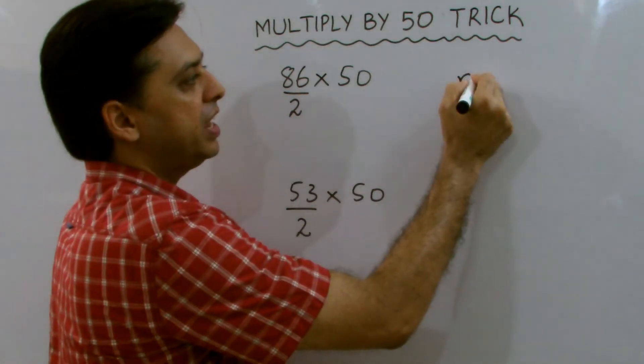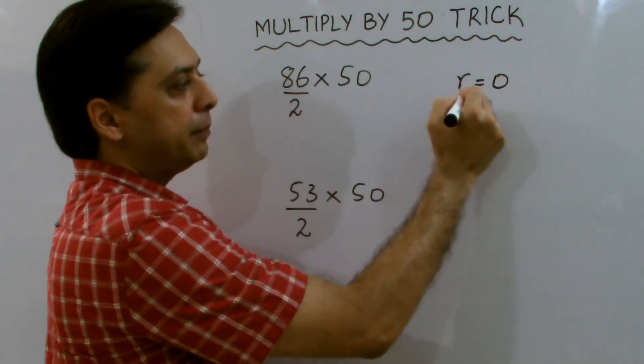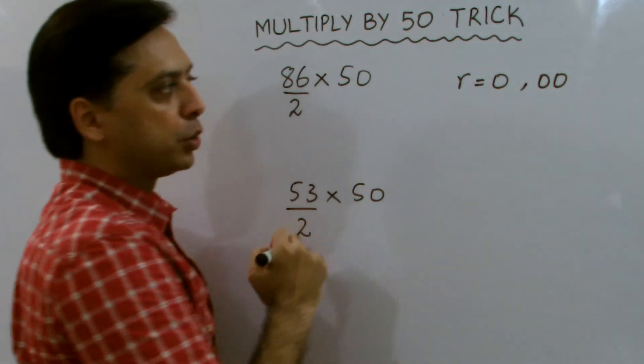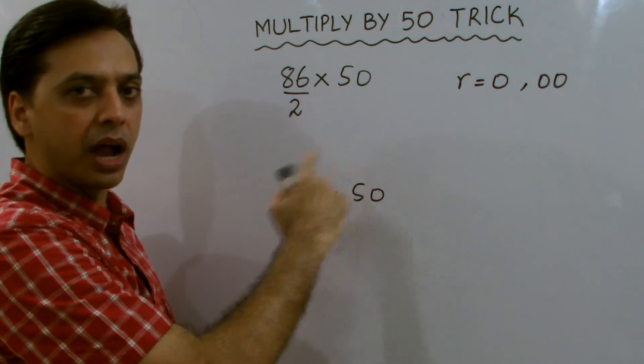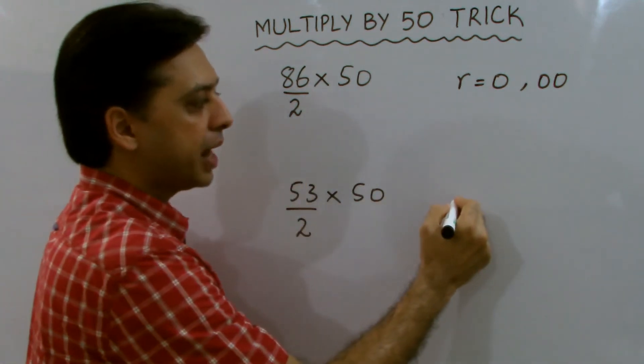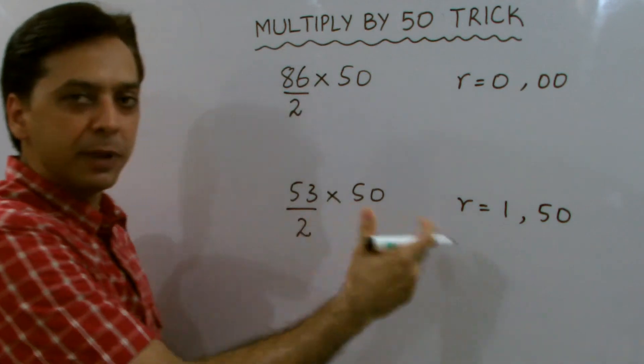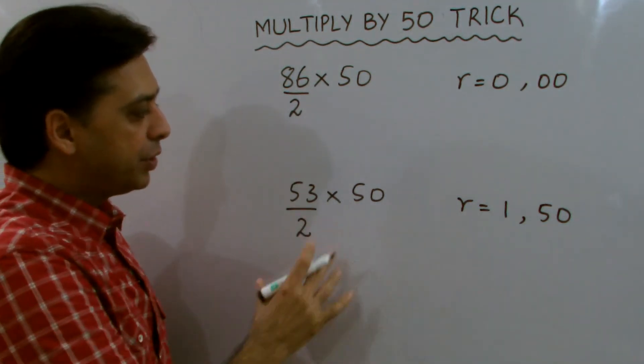If your remainder is 0, add two zeros to the value you got after division. If your remainder is 1, add 50 or place 50 after the value you got from division.